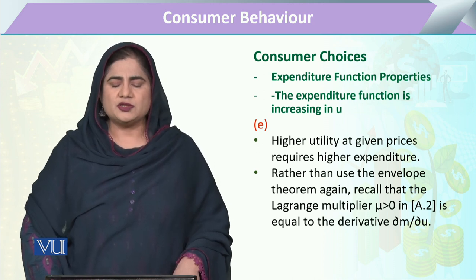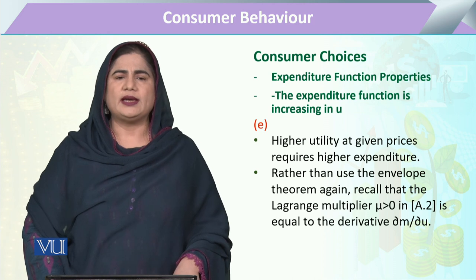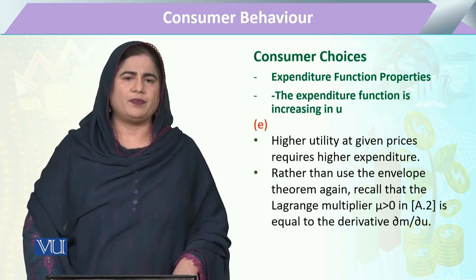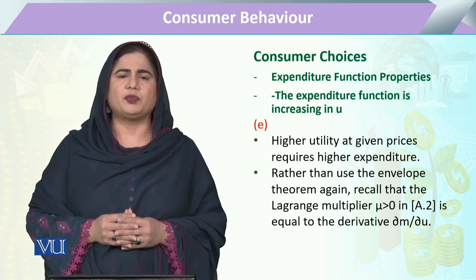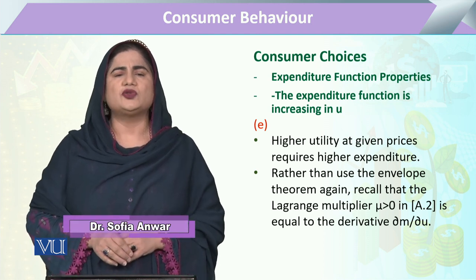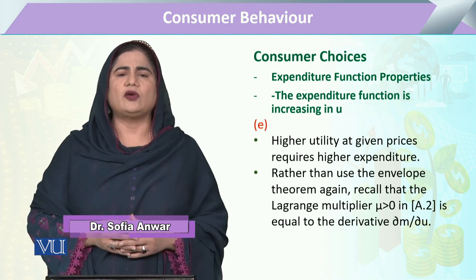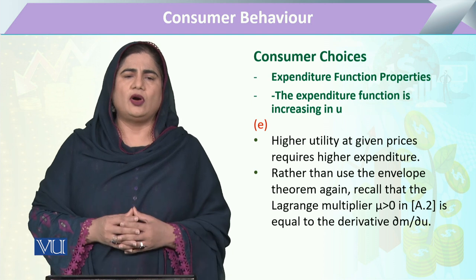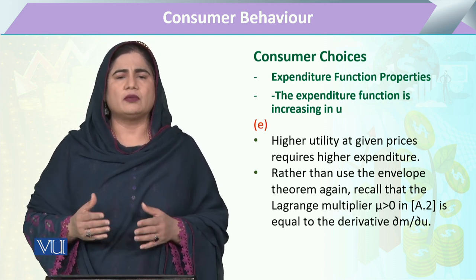This topic pertains to the expenditure function having the property that it is increasing when utility is increasing. As we have already studied in our previous lecture, whenever the consumer wants to increase its utility or wants to have more, there are only two aspects: either he can have more budget, or he has to substitute certain commodities with one another.